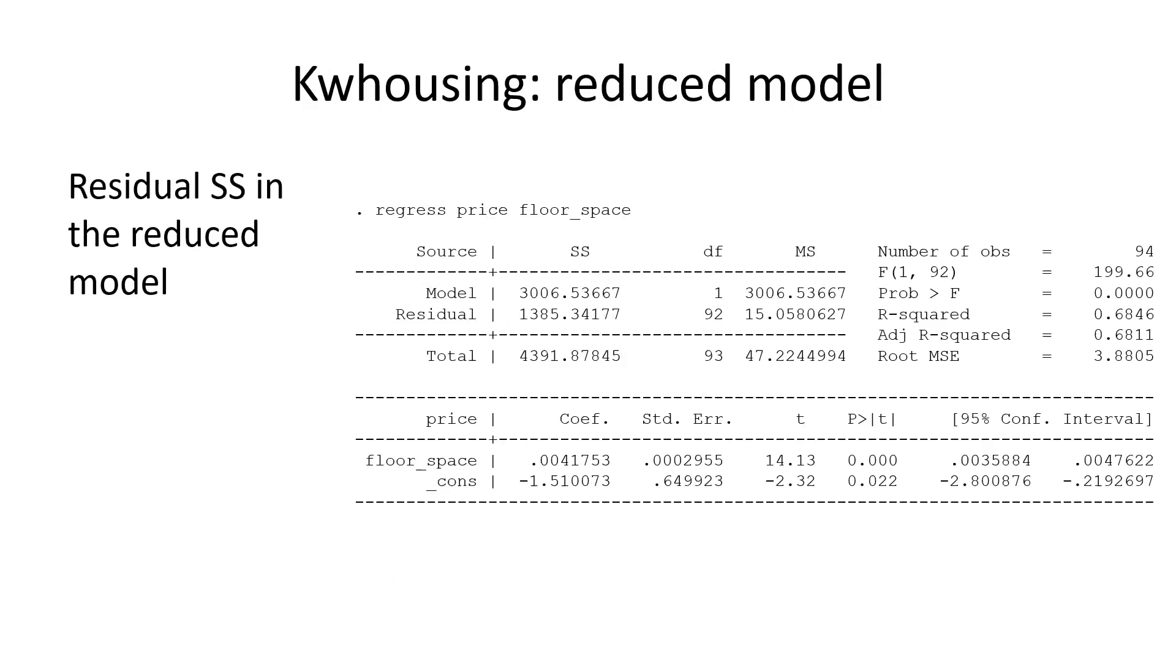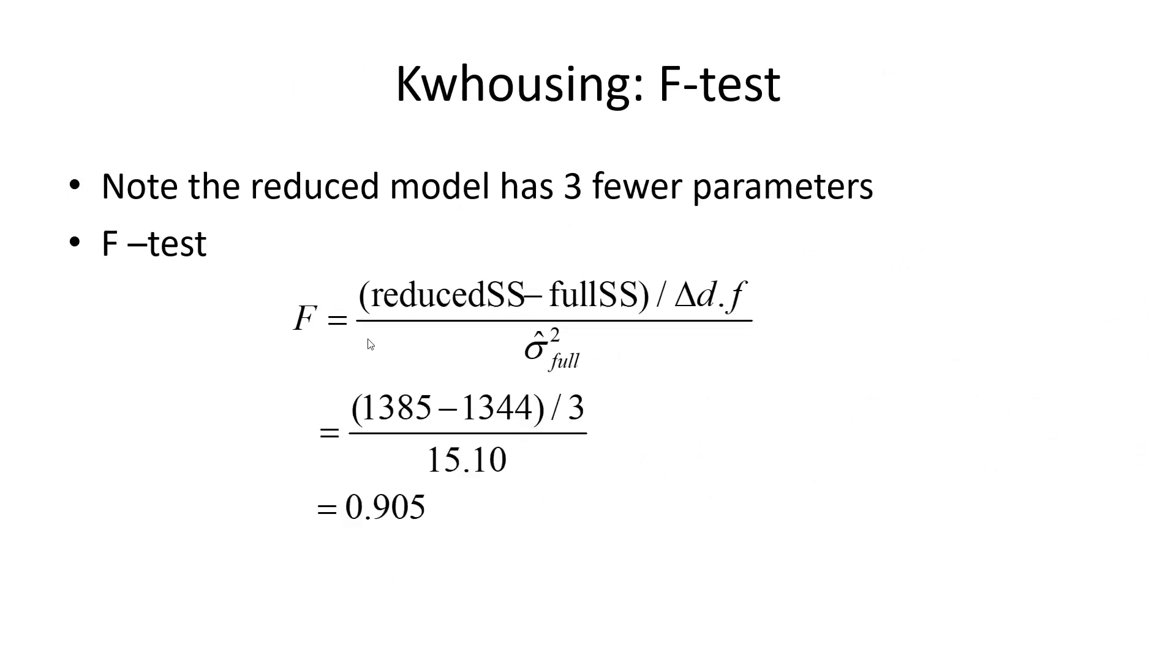Now we have two sums of squares. We subtract one from the other—this is from the output. Divide by the degrees of freedom: we are setting three variables to zero, so it's three. We get sigma squared from the output for the full model; that's also in the ANOVA table. We do some calculations and get 0.9.